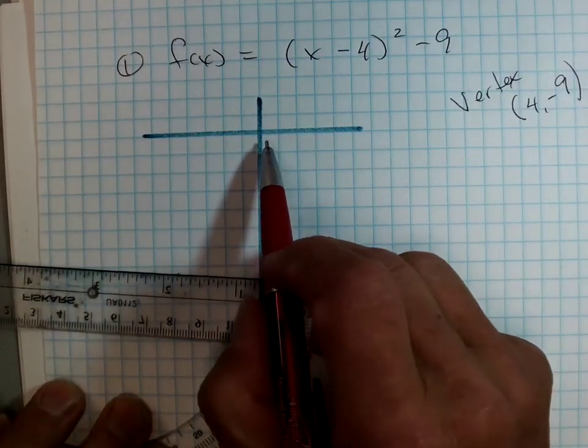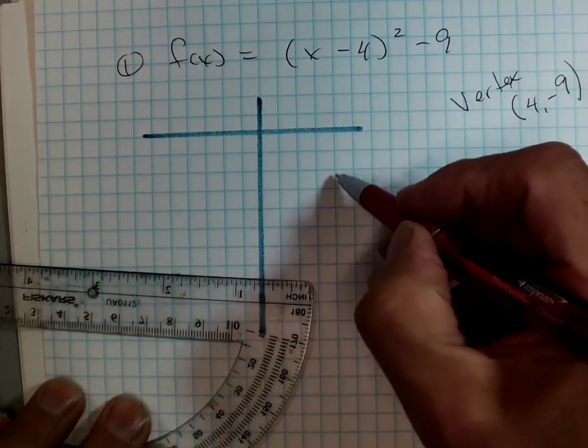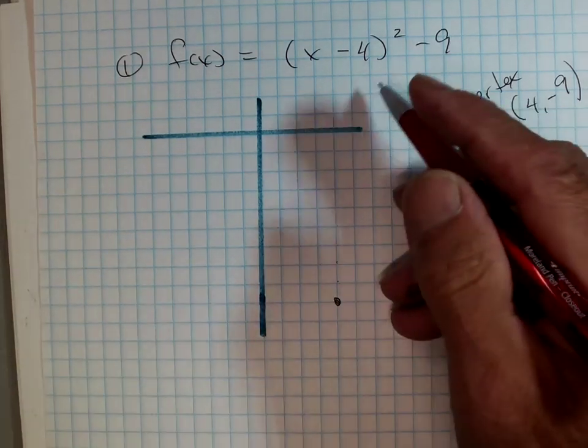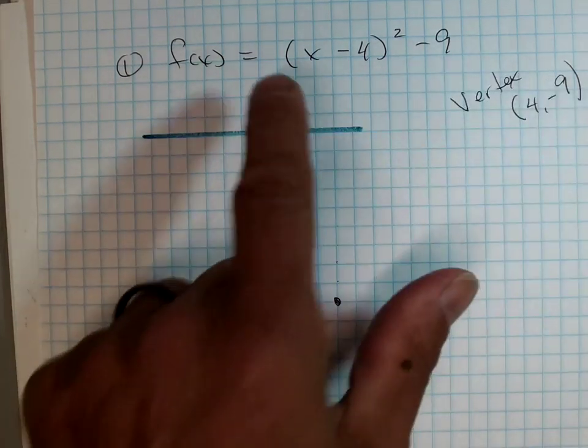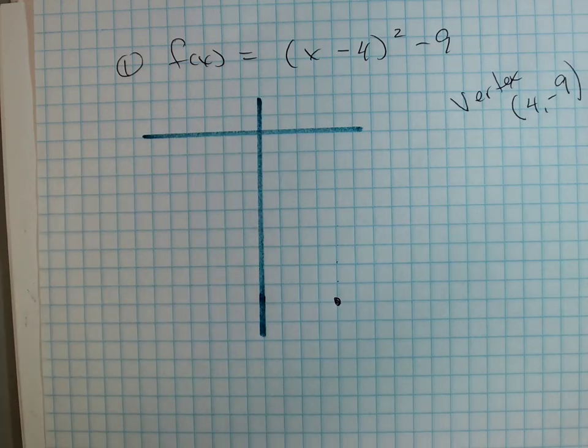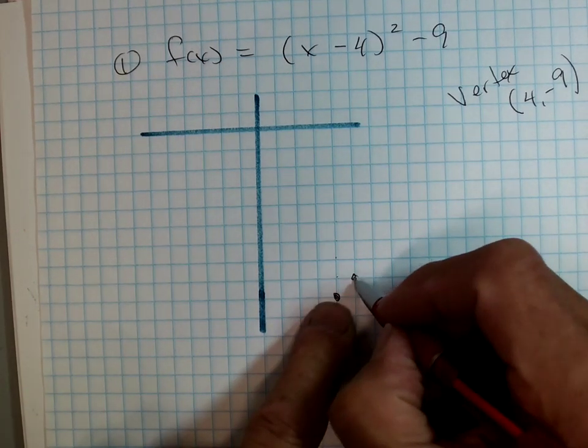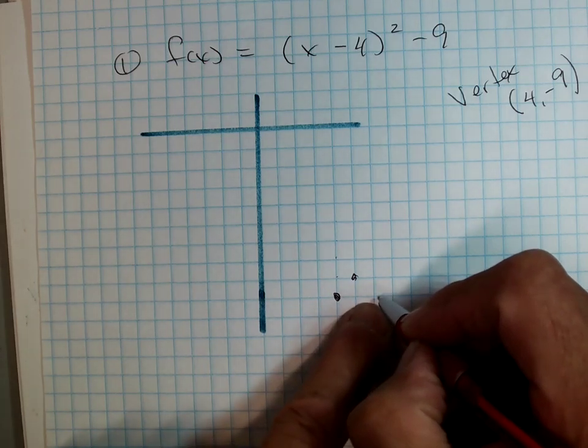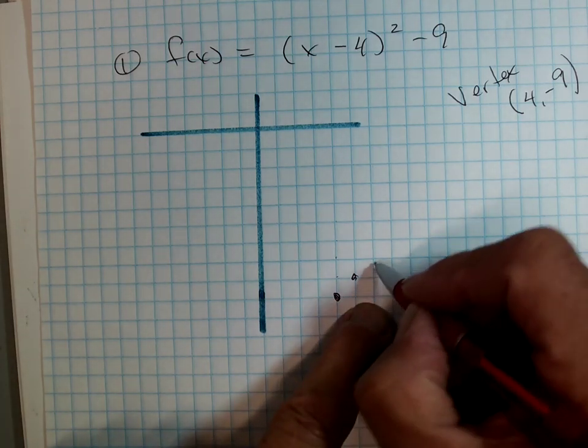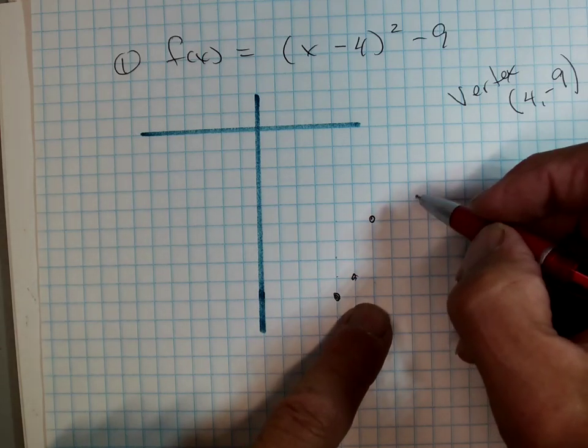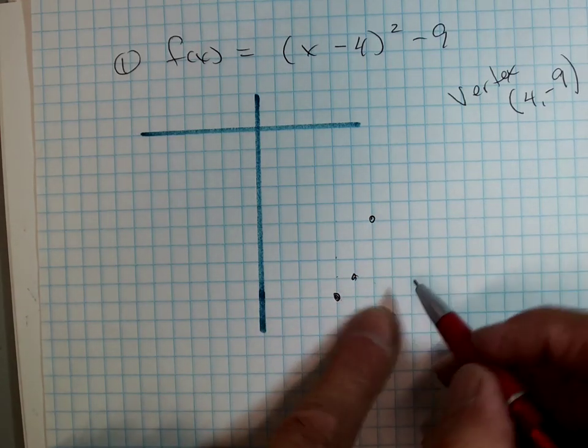And I know that the vertex of this, the vertex, is at the point positive 4, negative 9. Right? So I'm going to go 4, 1, 2, 3, 4, 5, 6, 7, 8, 9. And since it's a regular parabola, I'm just going to do my 1, 1, 2, 4, 3, 9. Right? 1 squared, 2 squared, 3 squared. From my vertex, I go over 1, up 1, 2. 2 squared is 1, 2, 3, 4. Am I going too fast?